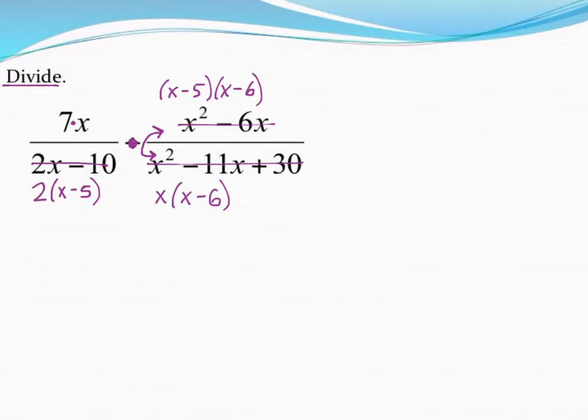Now is the fun part. Look for anything that's the same top and bottom anywhere and cancel them out. We can cancel out common factors, but we cannot cancel out common terms. So x minus 5 and x minus 5 can be canceled. I see an x minus 6 and an x minus 6 will cancel those out.